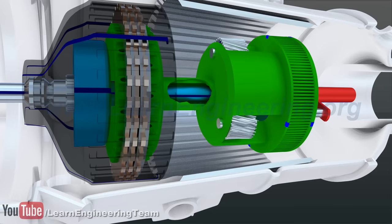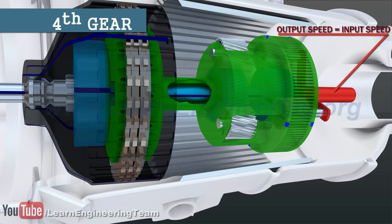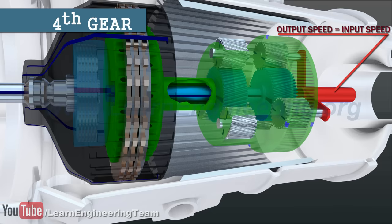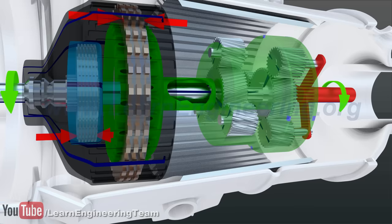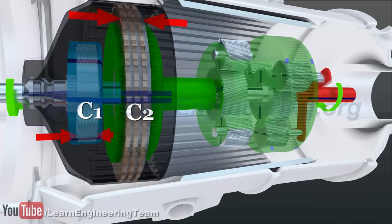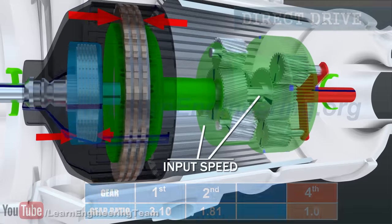With this setup, we can achieve a fourth gear, the direct drive. We know, in order to get a direct drive, the ring and sun gears of the output set should rotate at the speed of the input shaft. If we apply C1 and C2, this is what happens. The sun and ring gears will be directly connected to the input shaft.